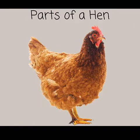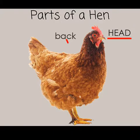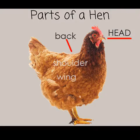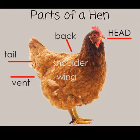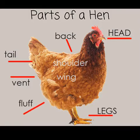Today let's learn about the basic parts of a hen. First there's the head, then the back and shoulder and wing. Next there's the tail and under the tail is the vent. The vent is the hole where the eggs come out. It's also how it uses the bathroom. The fluff are the feathers on its bottom and then the feet and legs, the breast and the neck.